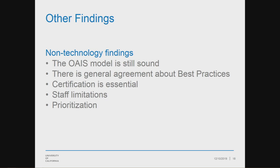We have determined that the OAIS model is sound — everyone we spoke to was comfortable with both the reference and functional models. No one told us we were on the wrong path, and it's clear the community is getting this right. There's not a lot of debate on what constitutes best practices for digital preservation. As far as certification goes, there doesn't seem to be any doubt that a preservation repository needs to be certified; if it's worth building, it's worth building to the community standard. On the flip side, certification is very time-consuming and expensive. With regards to staff resources, staff sizes are small or composed of people with other jobs — outside of the two certified repositories, no one has digital preservation listed as their primary job.